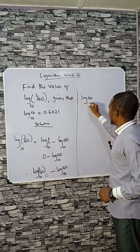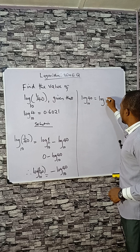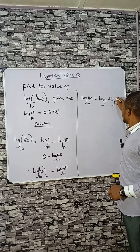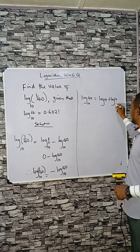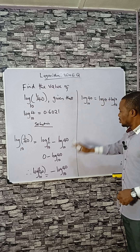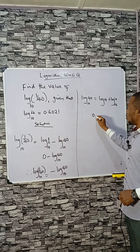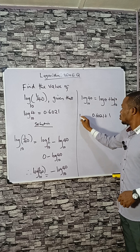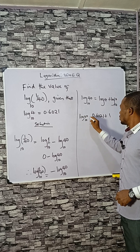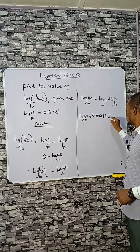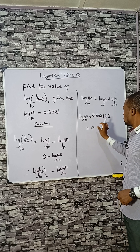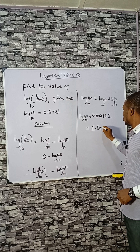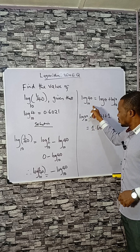Log 40 base 10 is expressed as log 4 plus log 10, because 4 times 10 is 40. Log 4 is given as 0.6021, and log 10 base 10 is 1. So log 40 base 10 equals 0.6021 plus 1, which equals 1.6021.